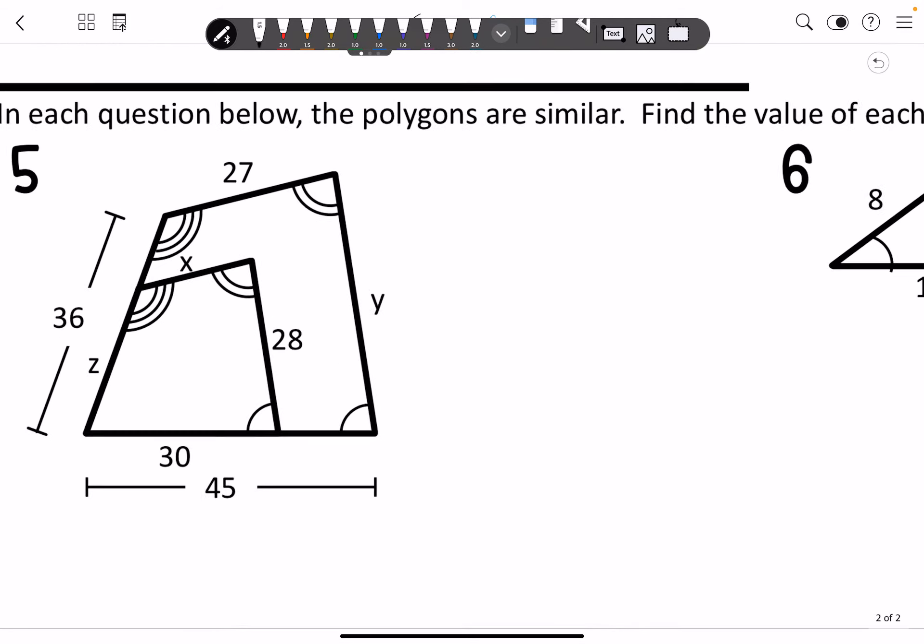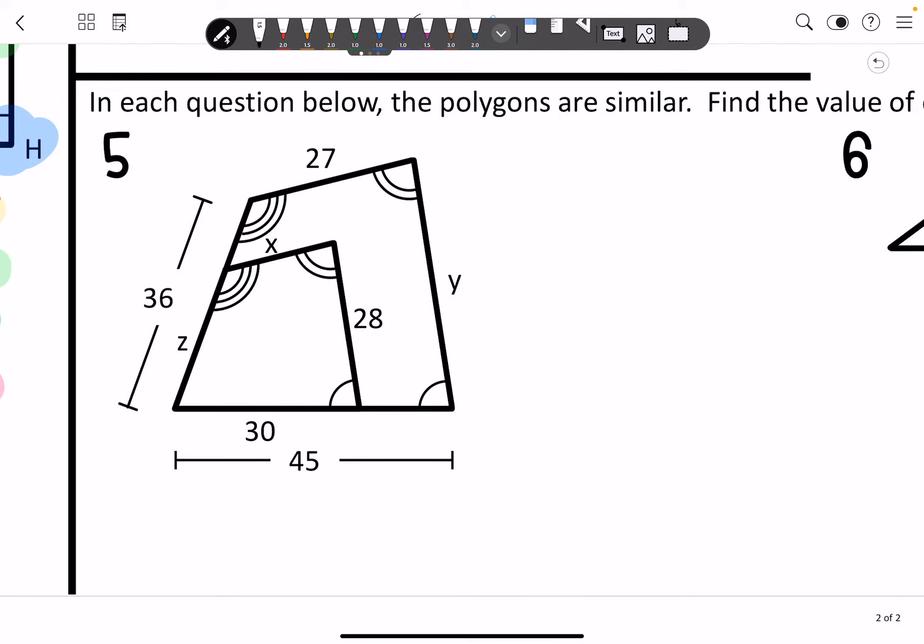Alright. Number 5 and number 6. I like to figure out where it's set up. So I labeled them. And I did A, B, C, D. And I did this as E, F, G. So it's A, B, C, D is similar to A, E, F, G.